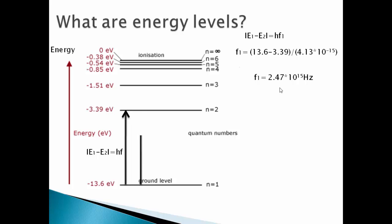Similarly if an electron was to jump from ground level to directly the third level of 1.51 electron volt energy, then E1 minus E3 equals to hf2. We put the value, simplify, we get f2: 2.92 times 10 to the power 15 hertz.